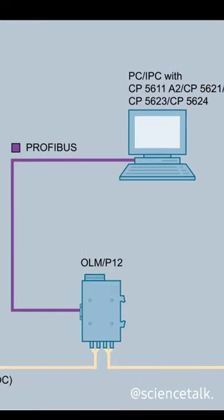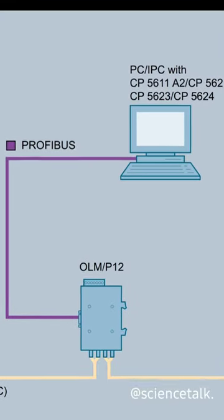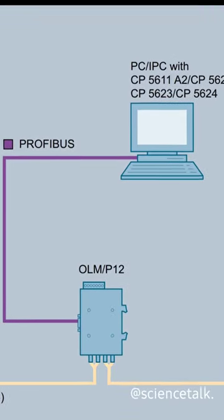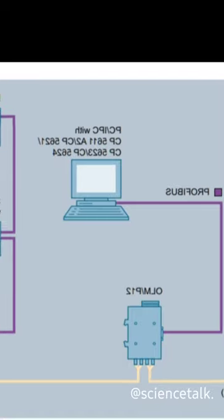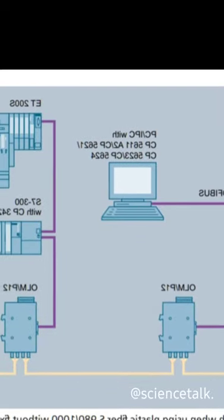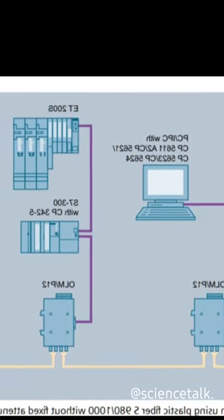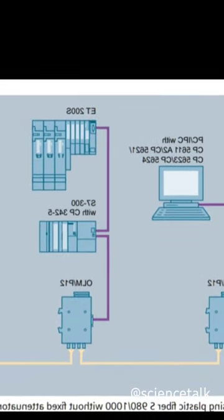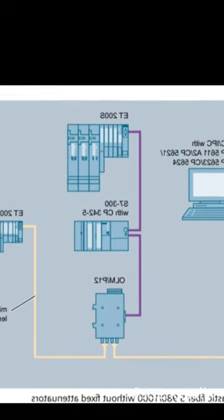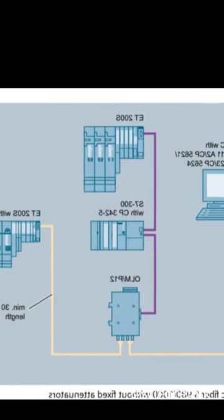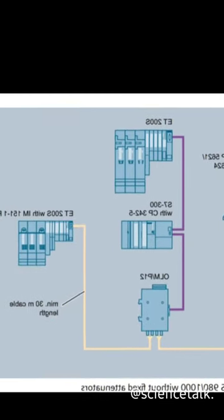This information can be used to identify and locate problems in the network and to plan maintenance and upgrades. OLM can also be used to measure the power levels and quality of the optical signals, which can help to optimize network performance and ensure that the network is operating within acceptable limits.